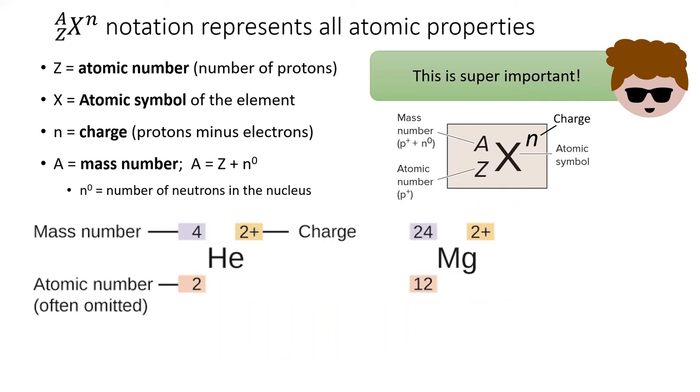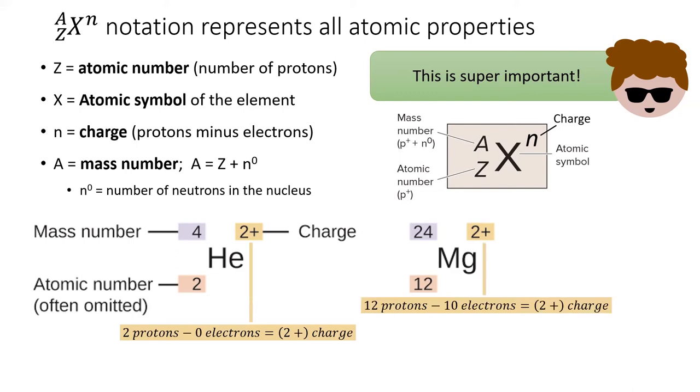Both our example atoms have a 2 plus charge, but this does not mean that they have the same number of electrons. Helium 2 plus contains no electrons, while magnesium 2 plus contains 10 electrons. However, we would commonly say that they are both missing two electrons.